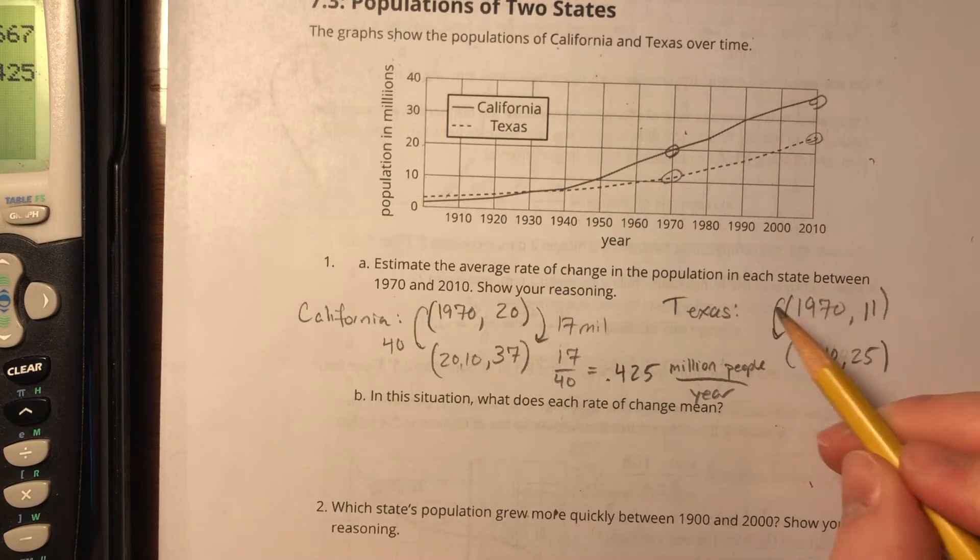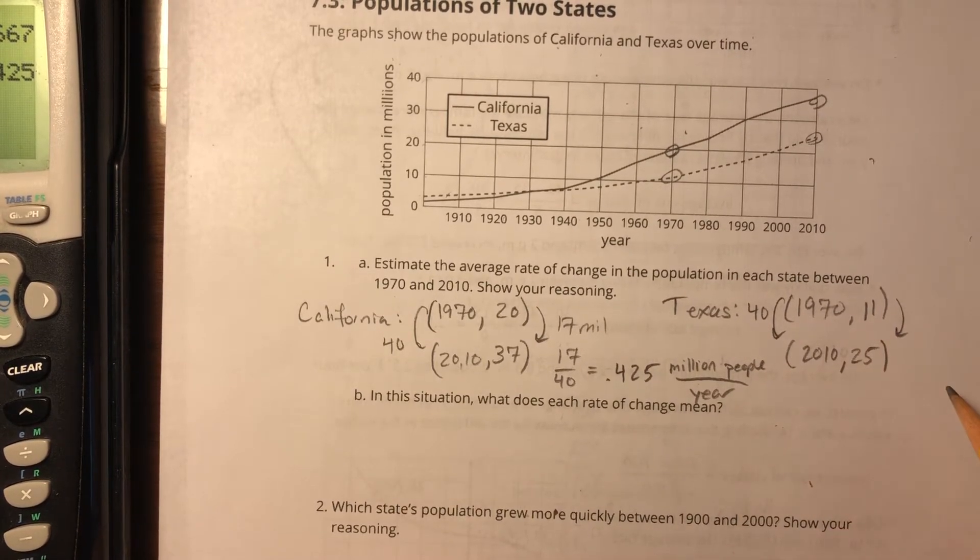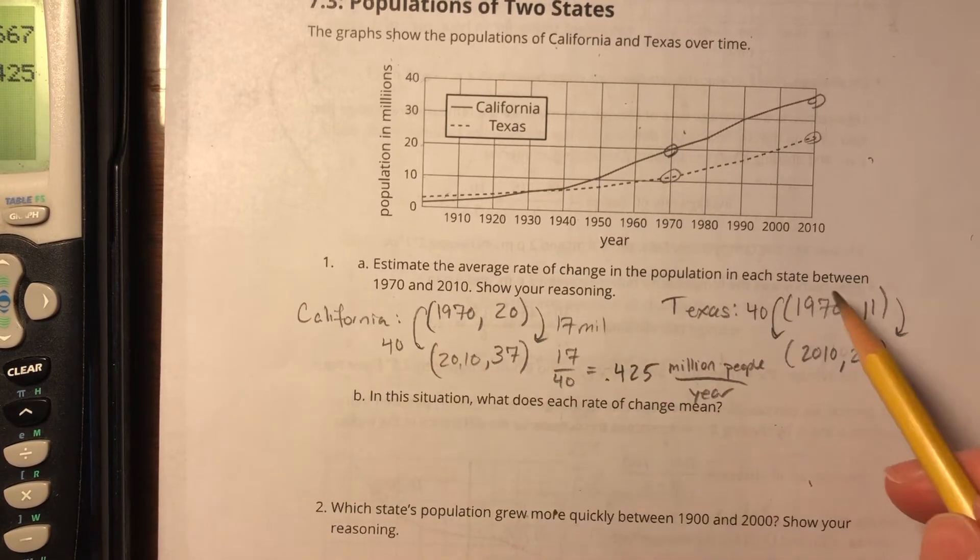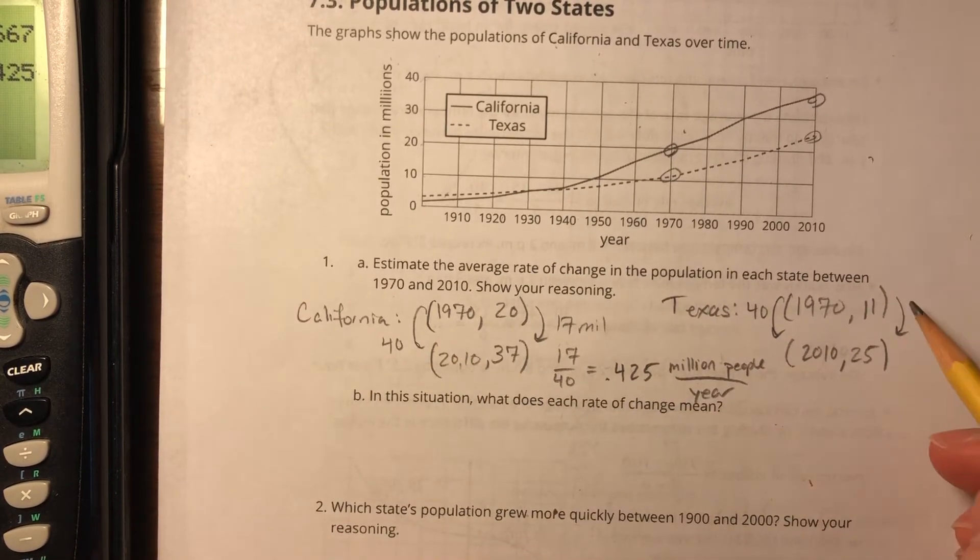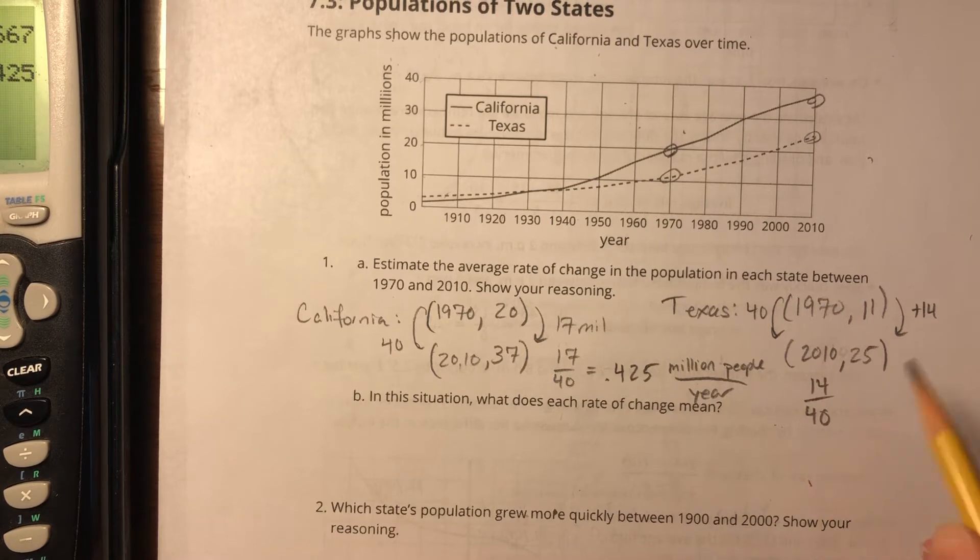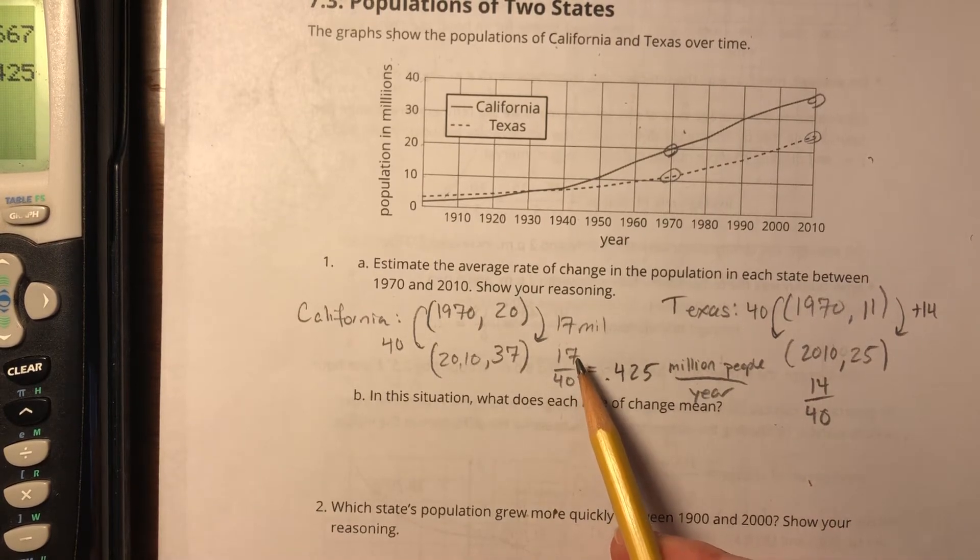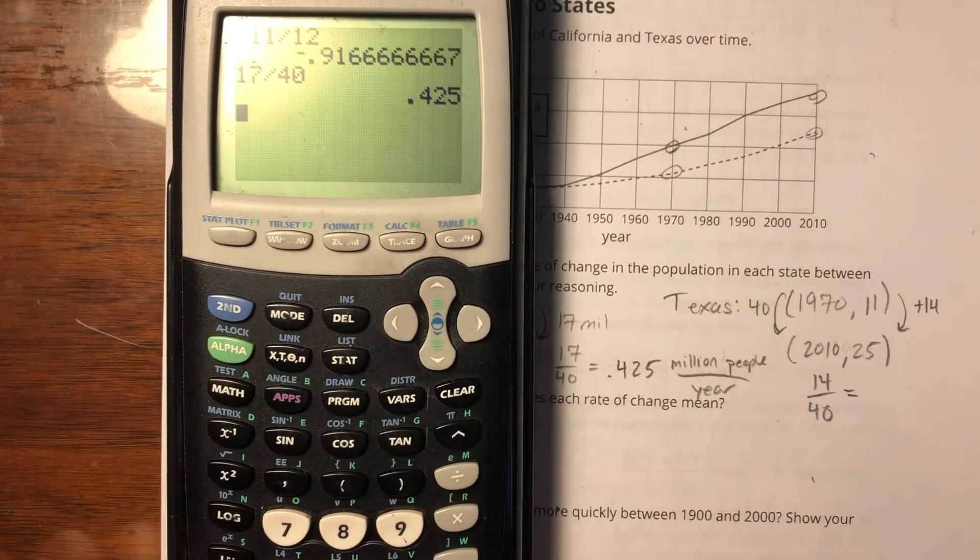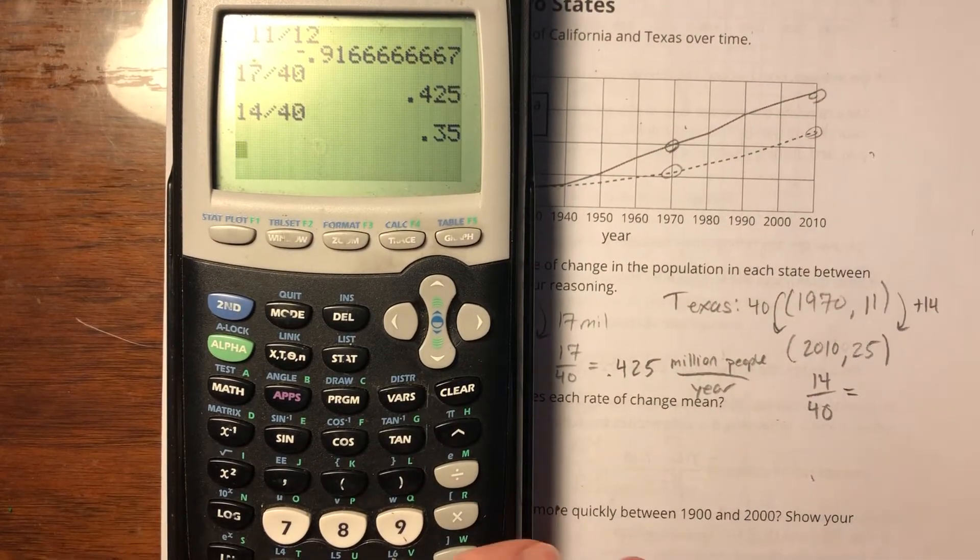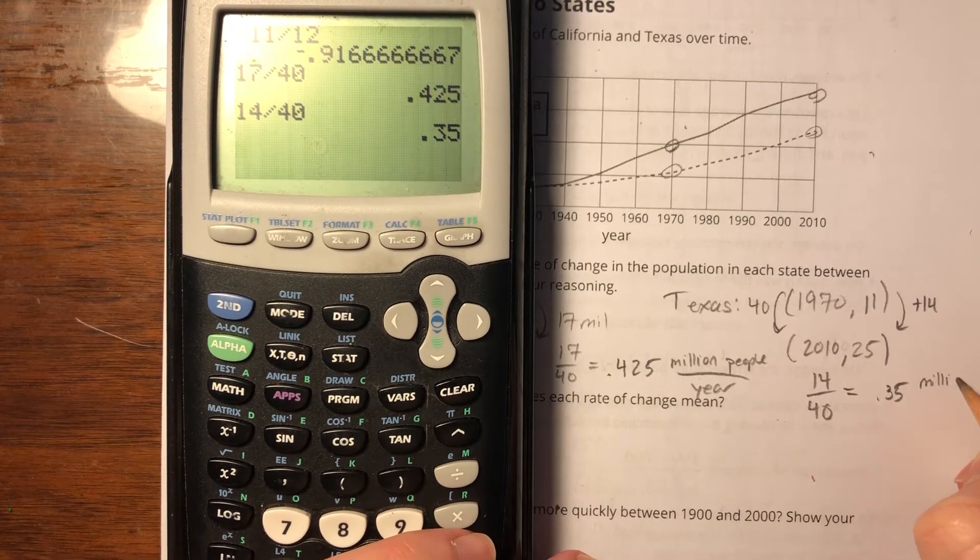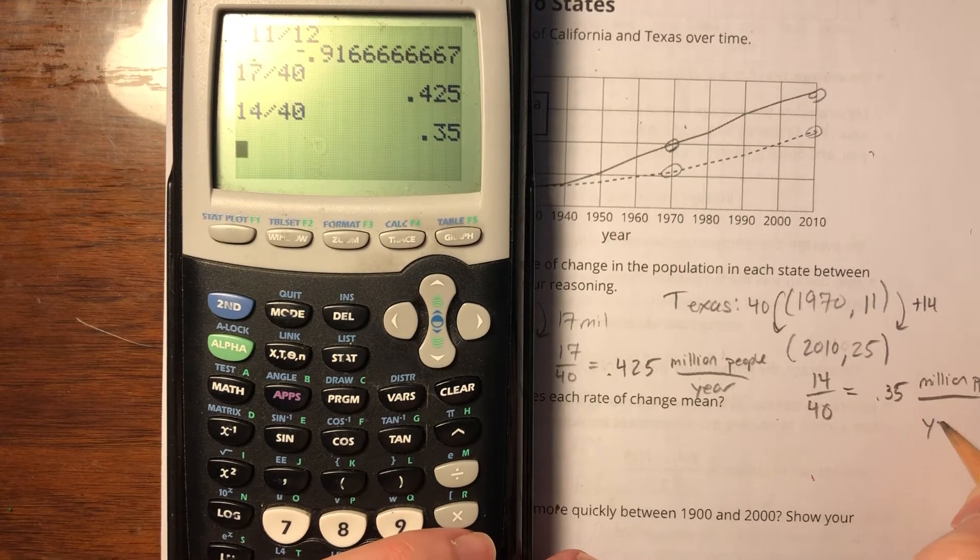So my change in y is 40, same as before. And my change in—I'm sorry, my change in x is 40, same as before. We're still going from the same years. My change in y is different, however. That's plus 14, so that'll be 14 over 40. Already I know it's going to be slightly less because this was 17 over 40. This is 14 over 40.